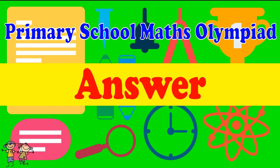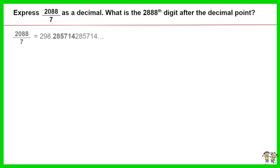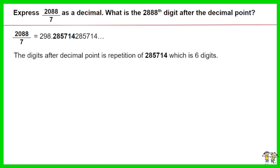Here is the recommended answer. 2088 over 7 in decimal equals 298.285714285714 and so on. The digits after the decimal point are a repetition of 285714, which is a block of 6 digits.